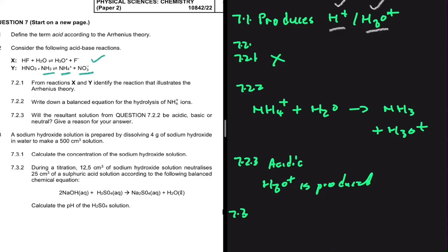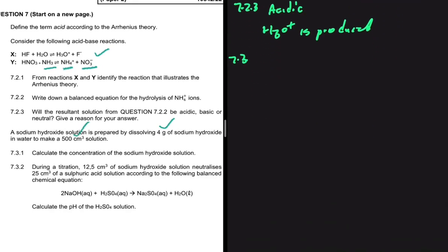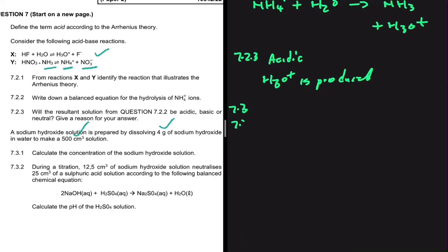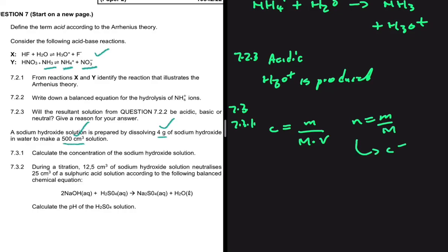In 7.3, a sodium hydroxide solution is prepared by dissolving 4 grams of NaOH in water to make a 500 cm³ solution. For 7.3.1, calculate the concentration. We use: concentration = mass ÷ (molar mass × volume), which combines n = m/M and c = n/V into one step.